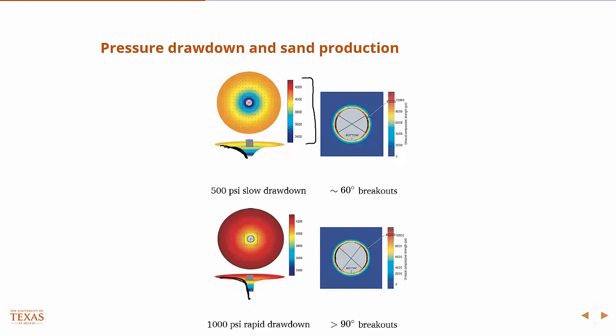But also the maximum and minimum pressure. These color bars are plotted on the same axis. Here on this plot, you're essentially in this region of pressures, whereas on this one, you're basically at the maximum and minimum. In those two cases, if you look at the failure of the wellbore and do a prediction of the breakouts via the failure model, then in this 500 psi slow drawdown case, you have breakouts that are on the order of 60 degrees versus over here you have breakouts that are greater than 90 degrees. With more breakouts, the total volume of sand produced is going to be greater, of course.